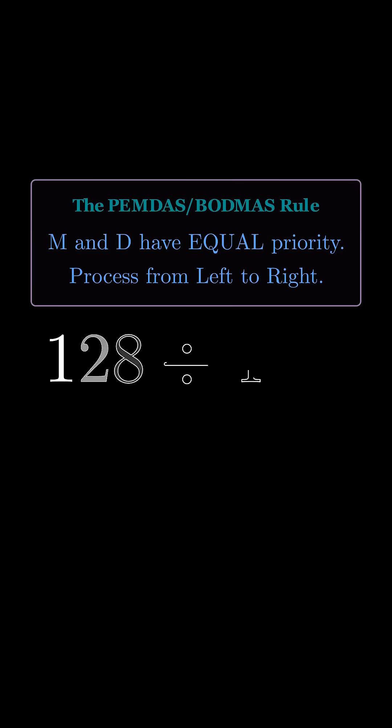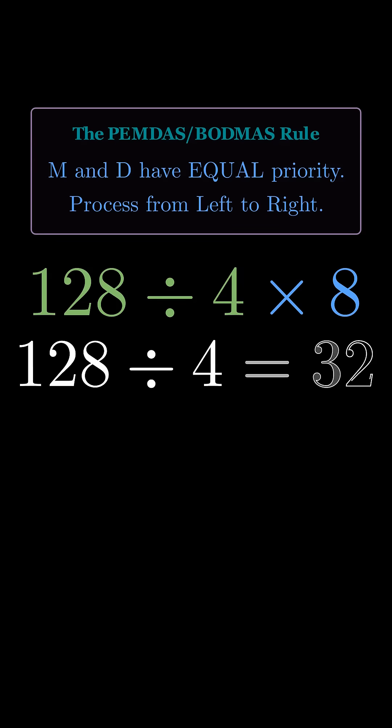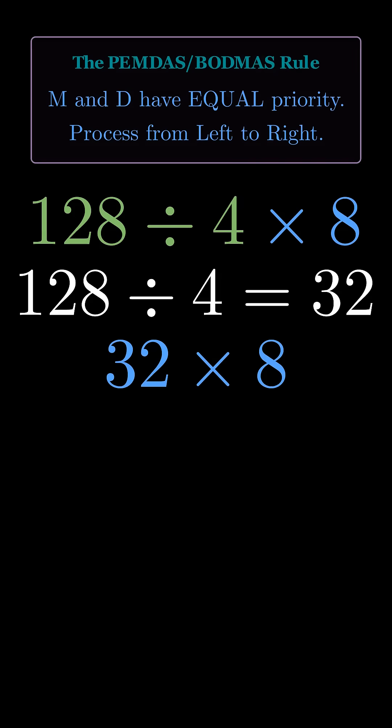Same start, make it explicit. Left to right, first operation: 128 divided by 4 equals 32. Now 32 times 8 equals 256. Completely different. This is why calculators disagree.